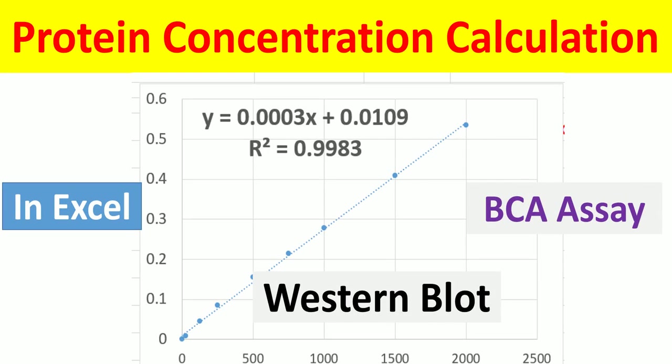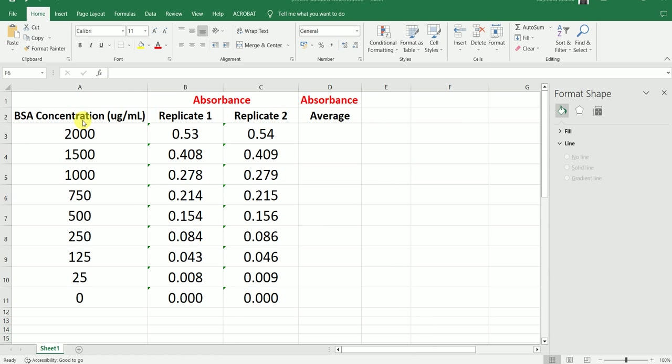Hello everyone. By the end of this lecture you will learn how to calculate protein concentration of an unknown sample from the standard curve in Excel for different biochemical applications such as Western blot. Here you have the concentration of standards such as BSA.